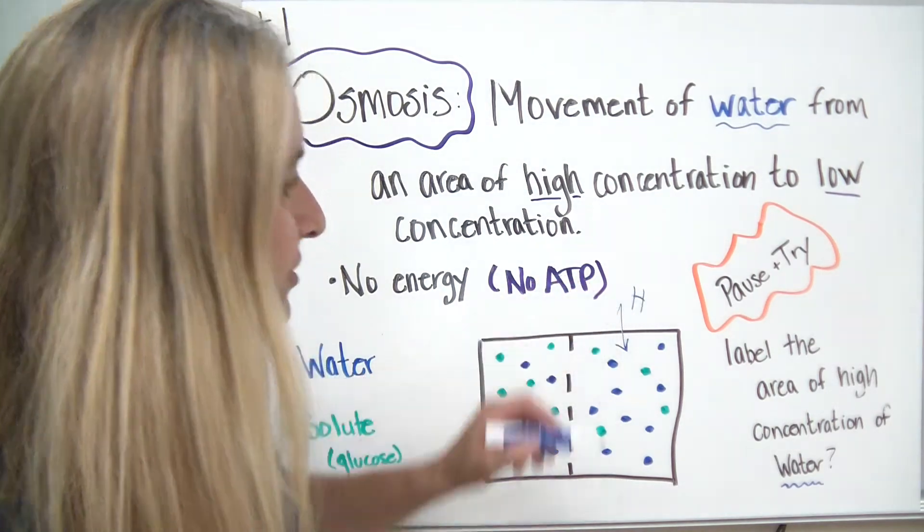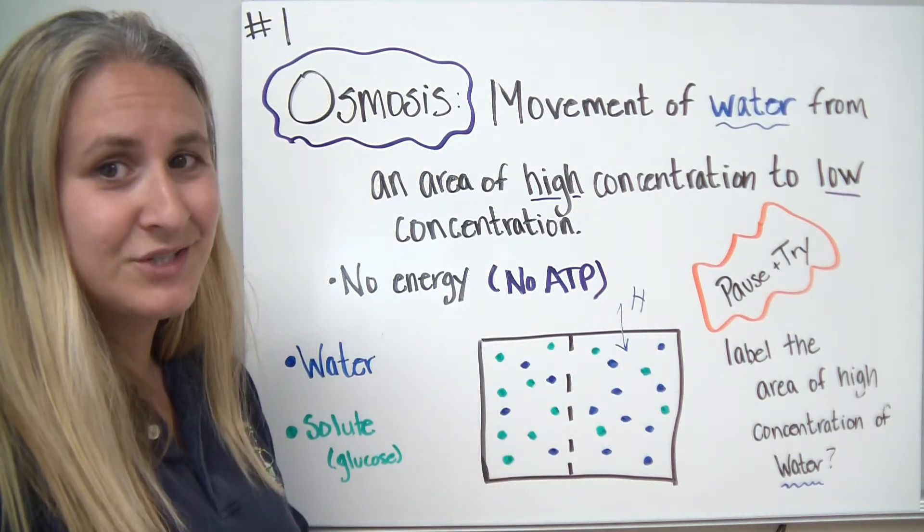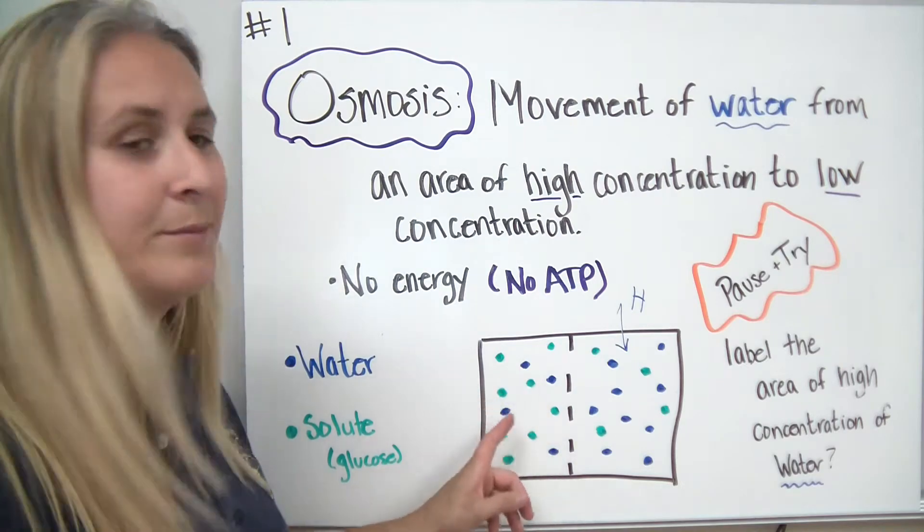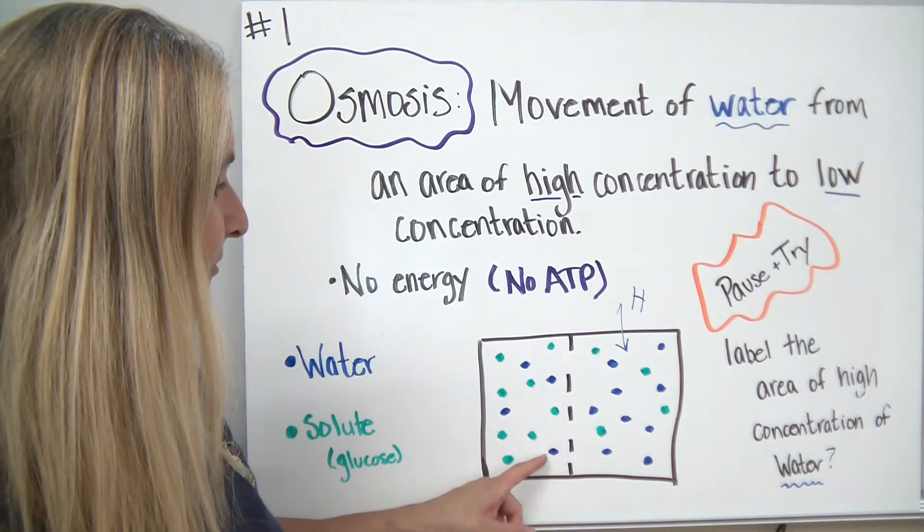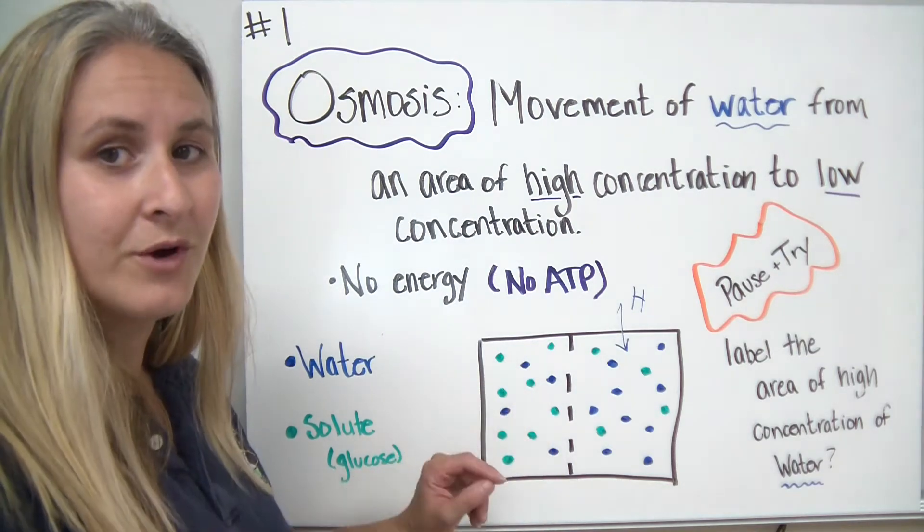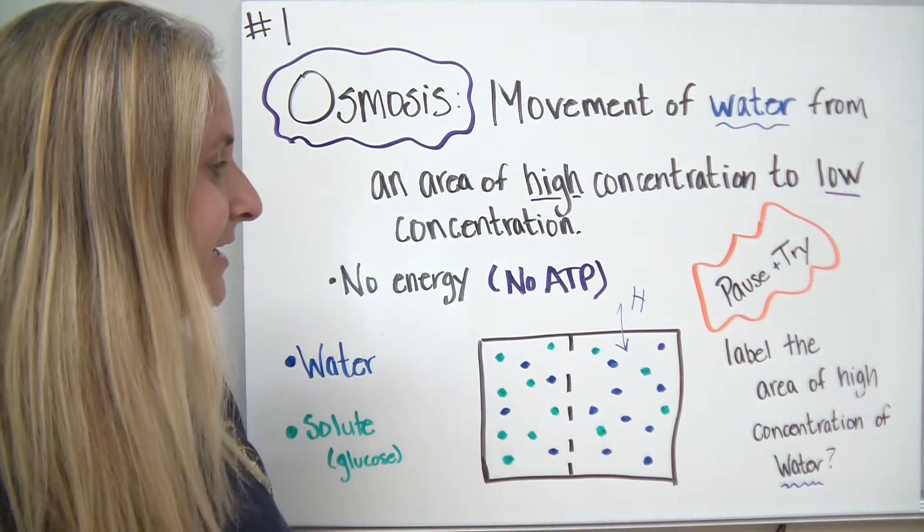This side had the higher concentration of water. The easiest thing to do is take a look and count the molecules. In this case, we had one, two, three, four water molecules, and on this side we had nine.